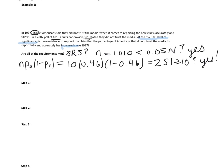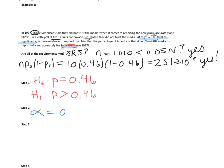Step one: write our null and alternative hypothesis. It's P — don't write P-hat. The status quo is from 1997: P equals 0.46. We want to know if that has increased, so that's a greater than for the alternative. This is a right-tailed test. Step two: state our alpha. It was given to us as the level of significance: alpha equals 0.05.